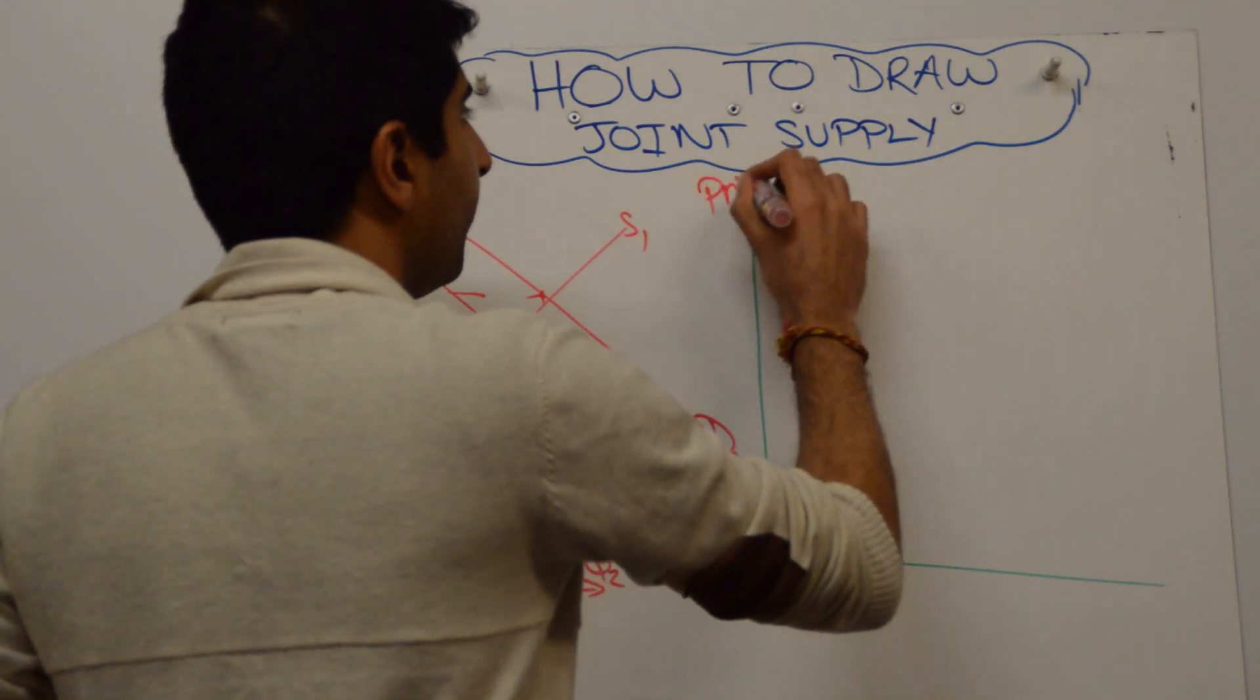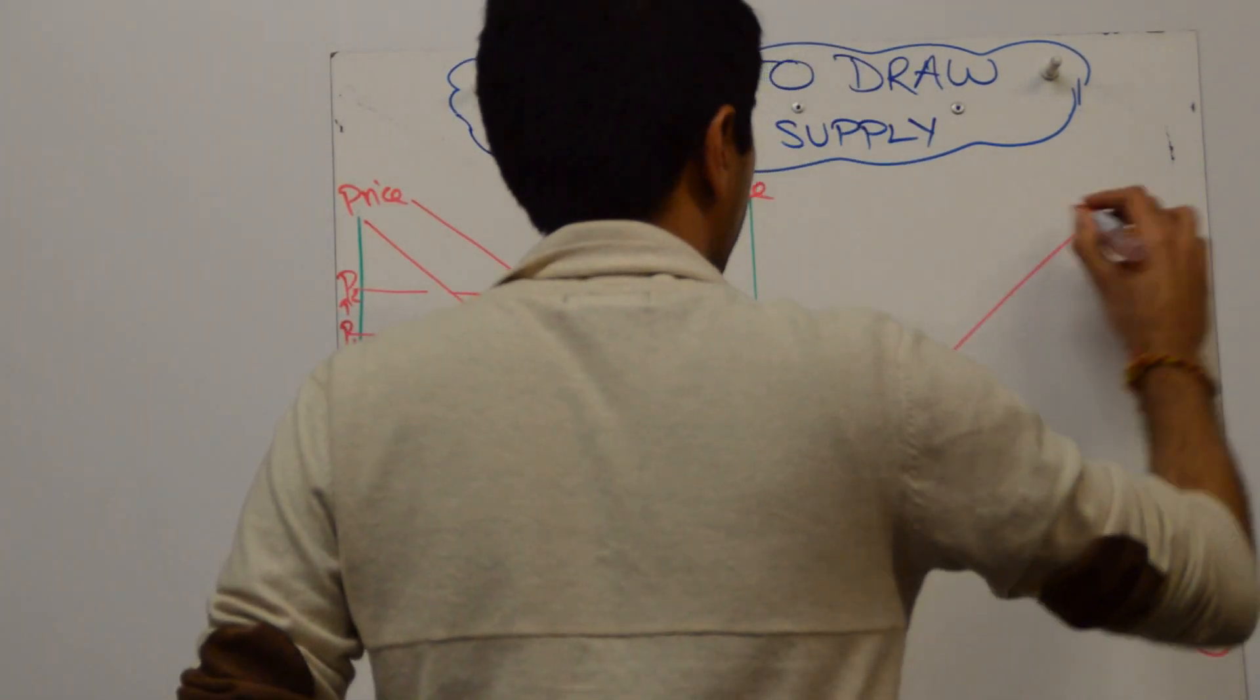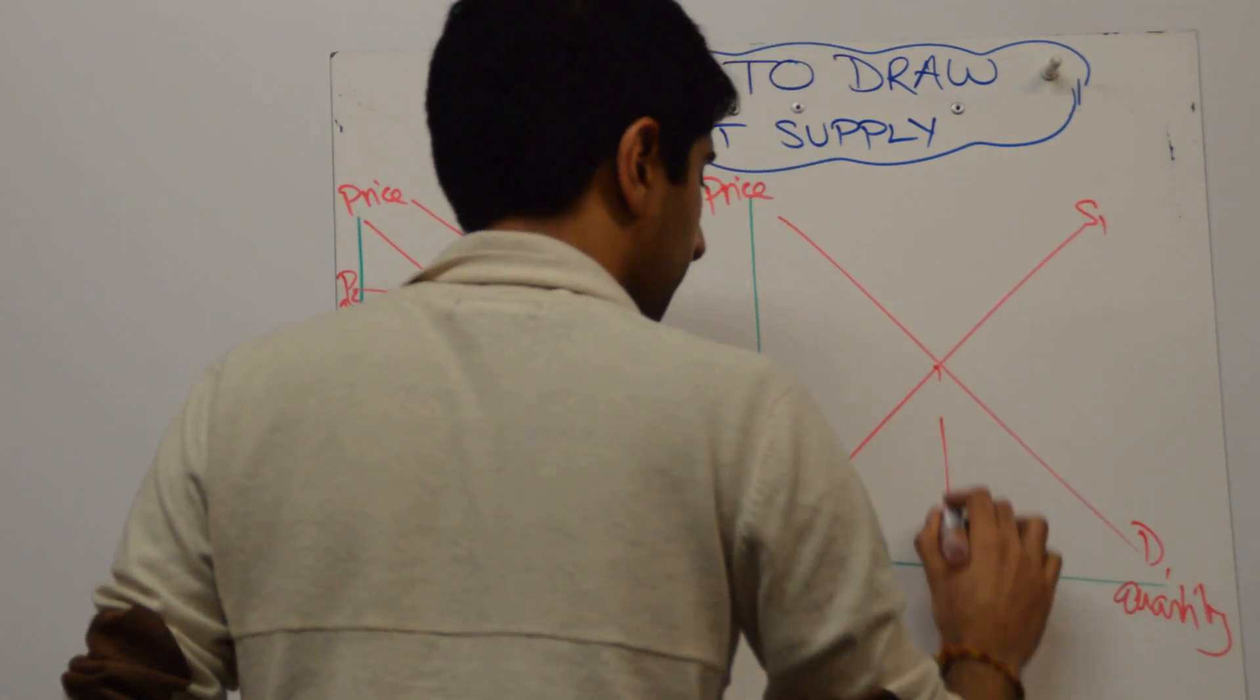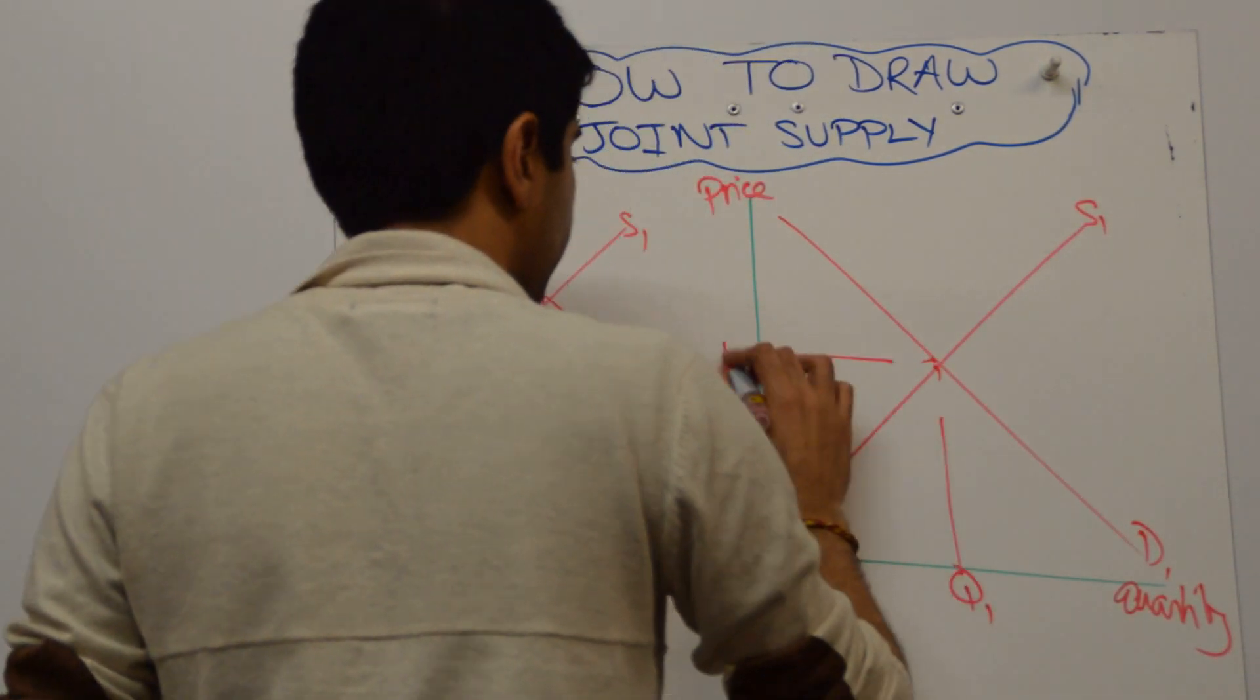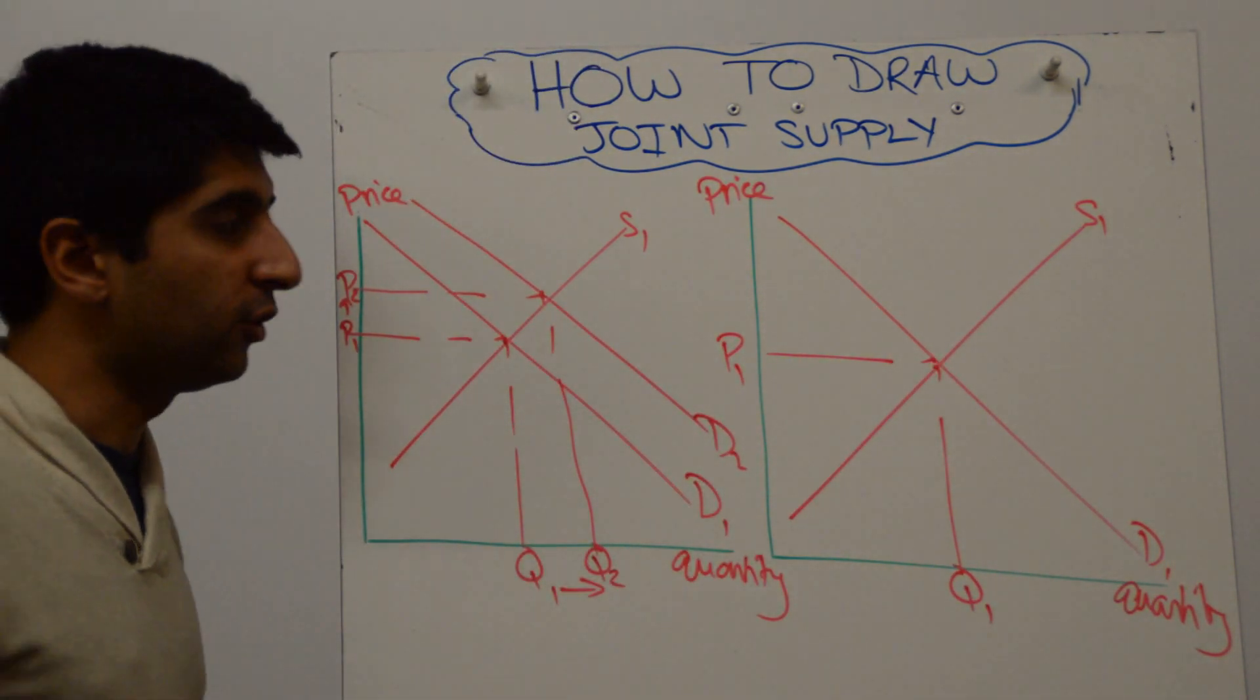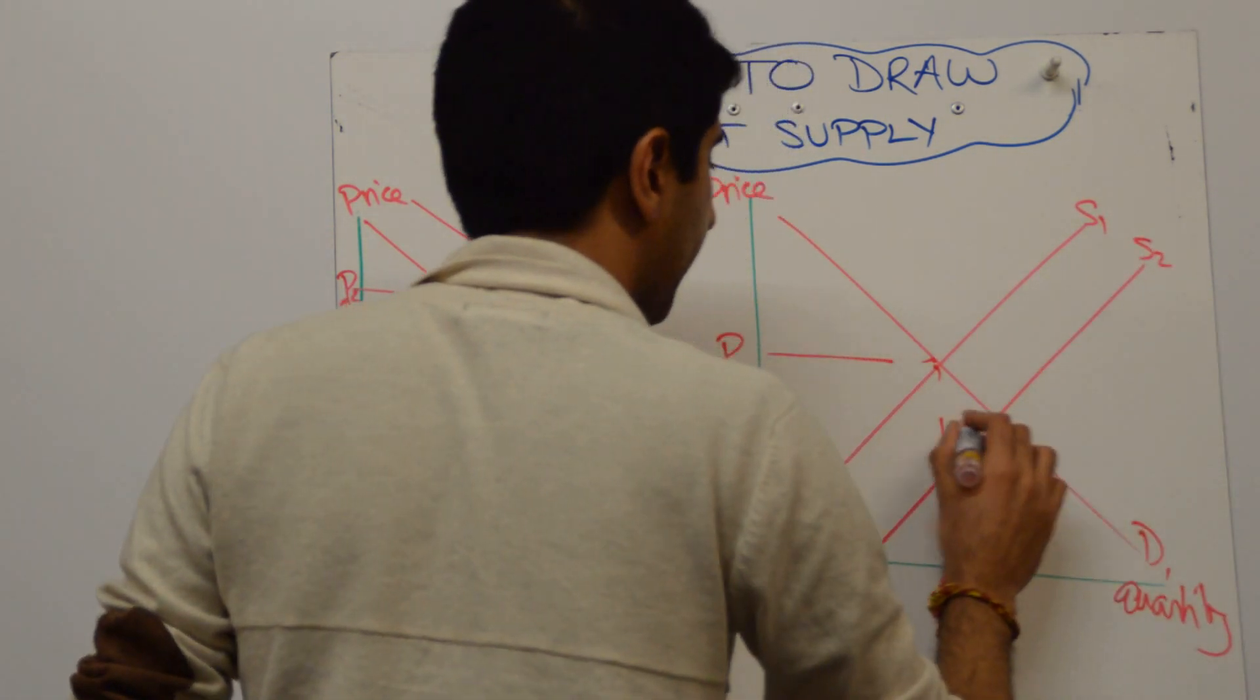As a by-product of that increase in production more beeswax is going to be produced as well. So on the right this could be the market for beeswax. And what you're trying to show is that as a result of honey production going up, the equilibrium in the beeswax market is going to change.